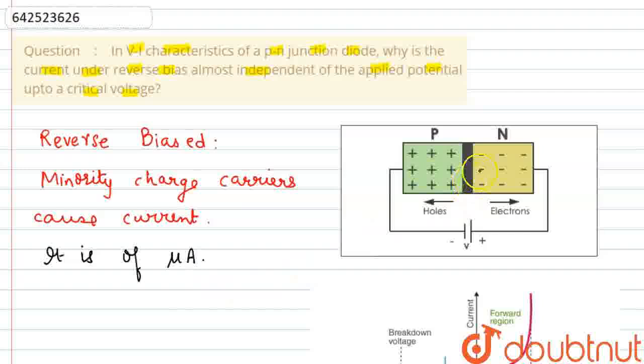In reverse bias, the depletion layer between P and N region goes on increasing. The holes in the P region and electrons in the N region are pulled away from the depletion layer. There is no diffusion of the charge carriers across the depletion layer in reverse bias condition.